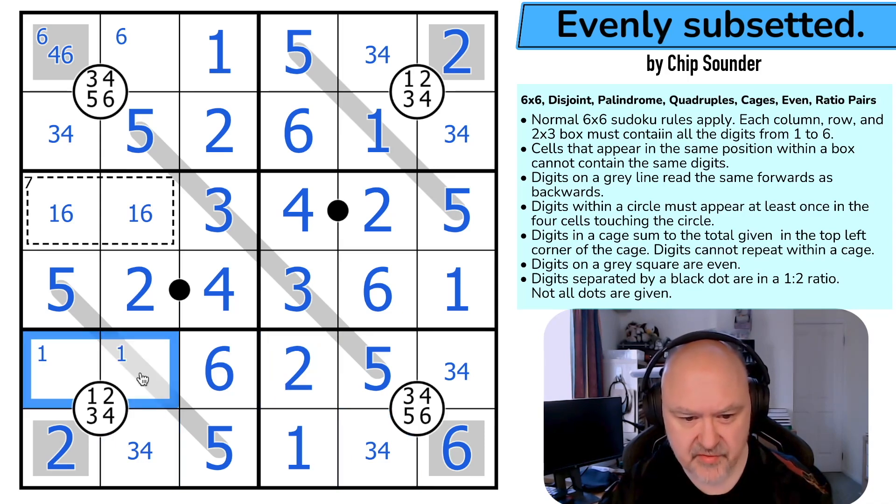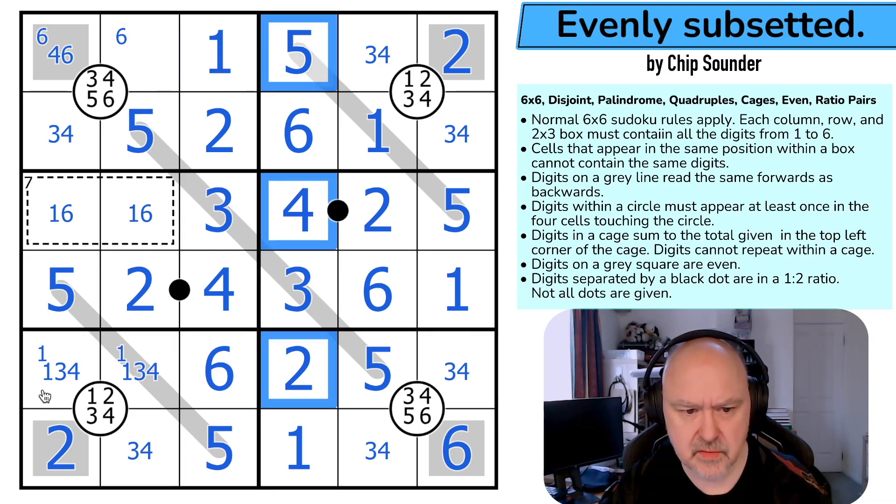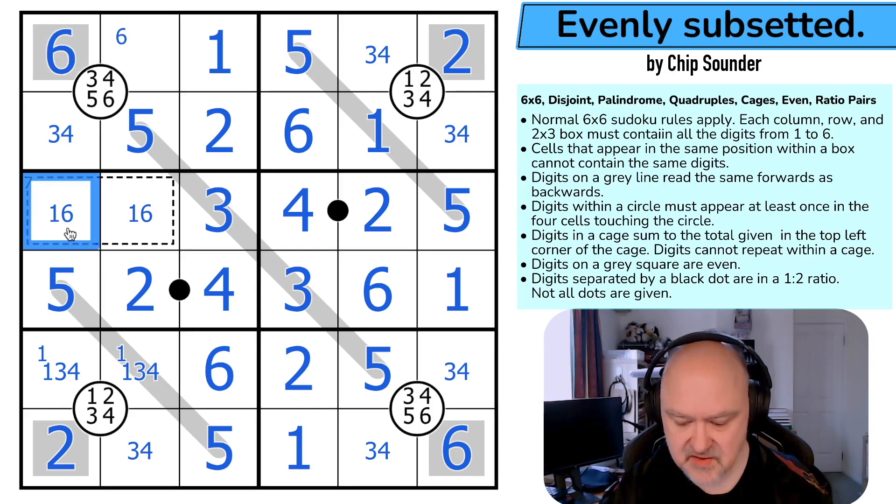There's a 1 in one of those. This is 1, 3, 4. I keep thinking it's that 6, but I can't see it. I've got 2, 4, 5. So that 4 sees that one. That can't be a 4 because of that. That's the 6, so that's the 1.